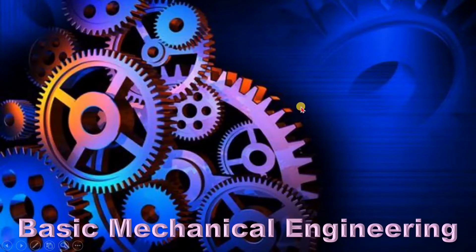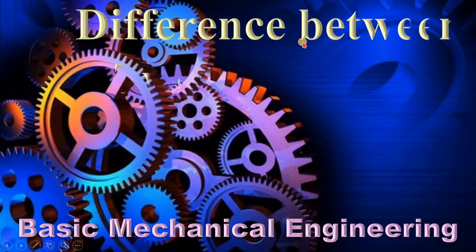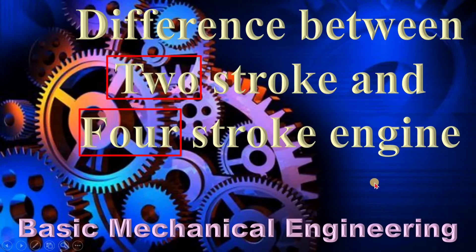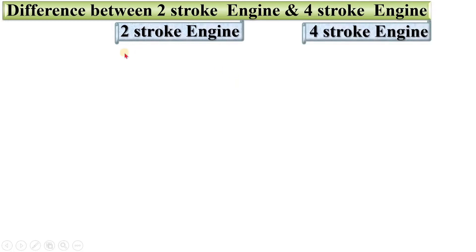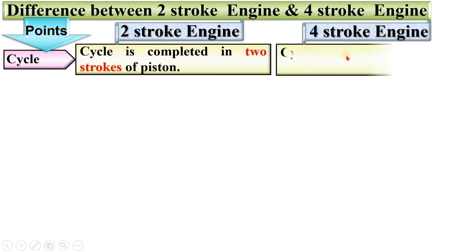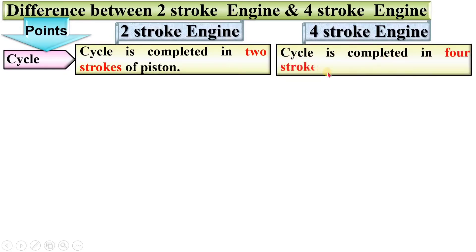Welcome to my basic mechanical engineering playlist. Today, I am going to discuss the difference between two-stroke and four-stroke engines. Let's see one by one with the points per cycle. In case of a two-stroke engine, the cycle is completed in two strokes of the piston. Whereas, in case of a four-stroke engine, the cycle is completed in four strokes of the piston. That is why they are called the two-stroke engine and the four-stroke engine.